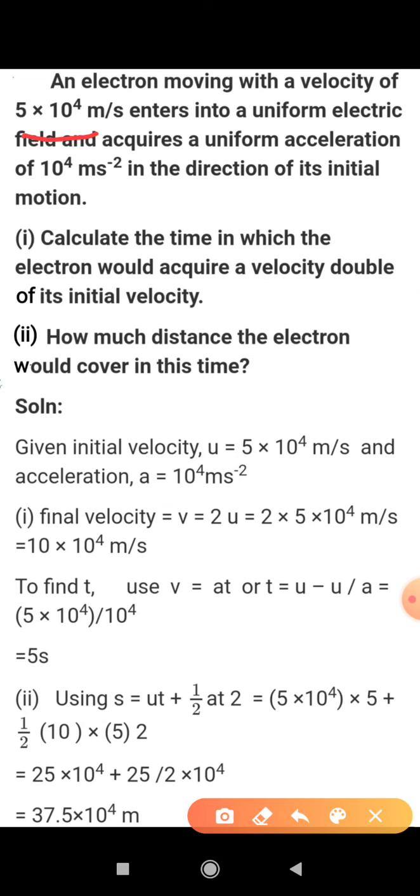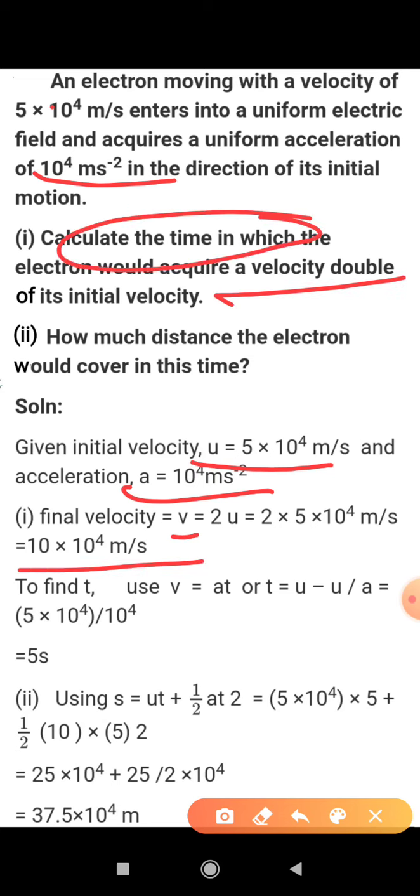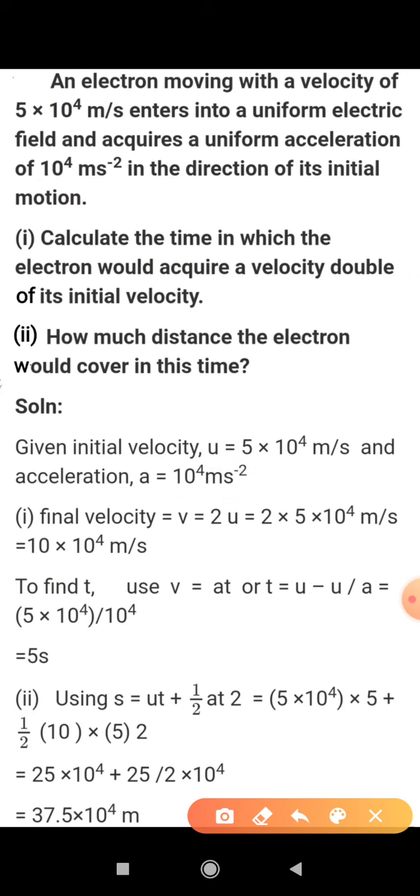According to this, we got some things like u, a, and v. Now we have to find time. To find t, we will use v = u + at. We are having the value of u, v and a, so we can easily find the value of t with the help of this formula.